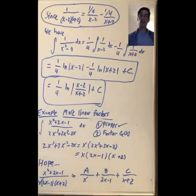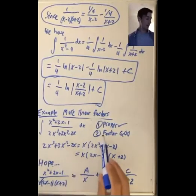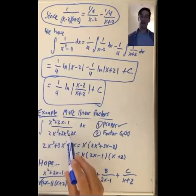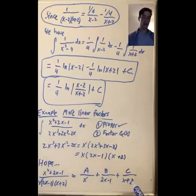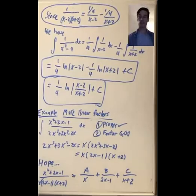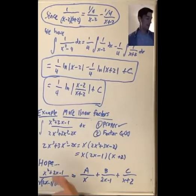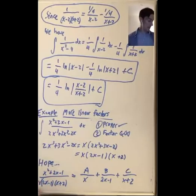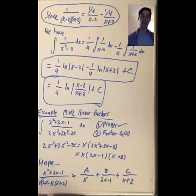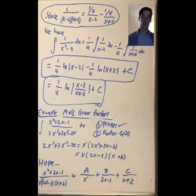What I want to do instead is tell you the other thing that can happen when your denominator gets more complicated. Here we had three distinct linear factors. If we had four distinct linear factors we would have another term like plus d divided by that next factor. The last thing I want to talk about in this video is what happens when you have two linear factors that are the same — like x times x plus 2 squared, where one of the factors shows up more than once in the denominator.